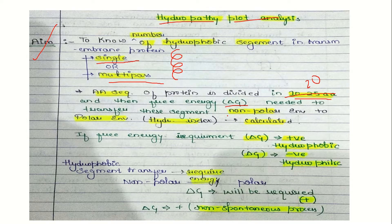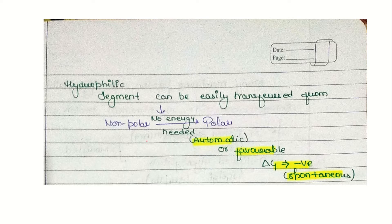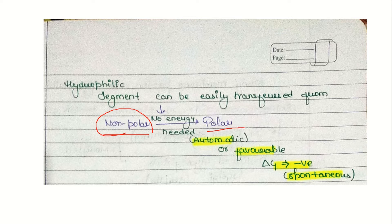What we do is take a non-polar segment — a window of 20 amino acids from our protein — and try to transfer it into water. We assess the free energy change, delta G, for this transfer of each 20-amino-acid segment into a polar aqueous environment.